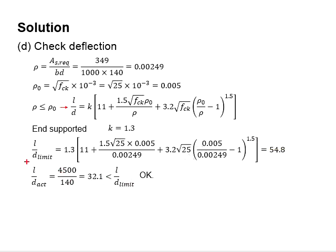The actual L/D is obtained by dividing the actual span with the actual depth of the slab. It is found to be 32.1 which is less than the limit. Therefore, the deflection is considered acceptable.